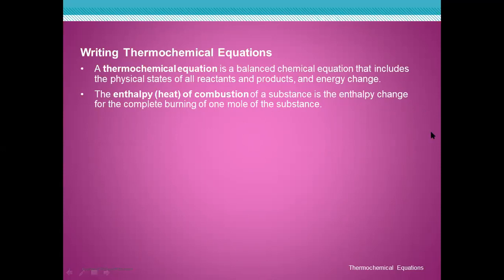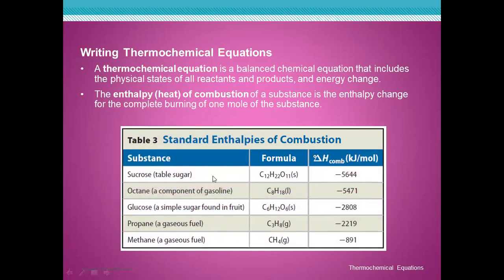This is called the standard enthalpy of combustion. For example, sucrose — a type of sugar also called table sugar — has the chemical formula C₁₂H₂₂O₁₁, it is a solid, and its standard enthalpy of combustion is negative 5,644. This table is for illustration only, not for memorization.